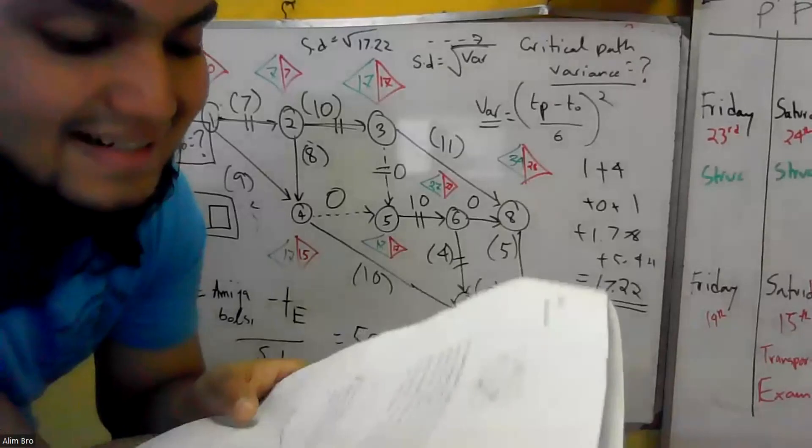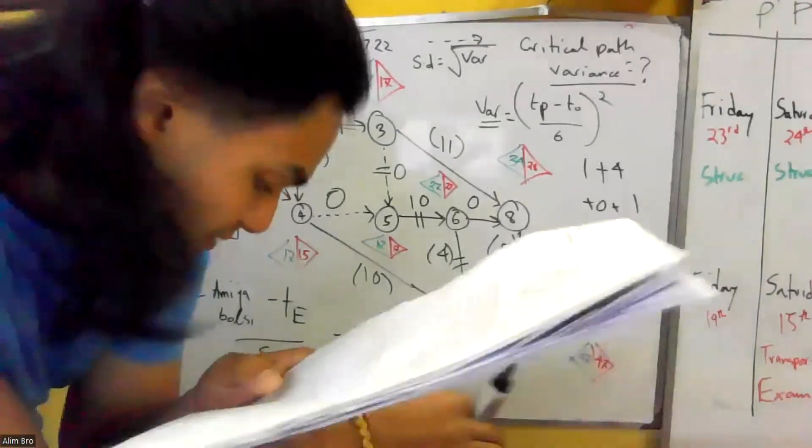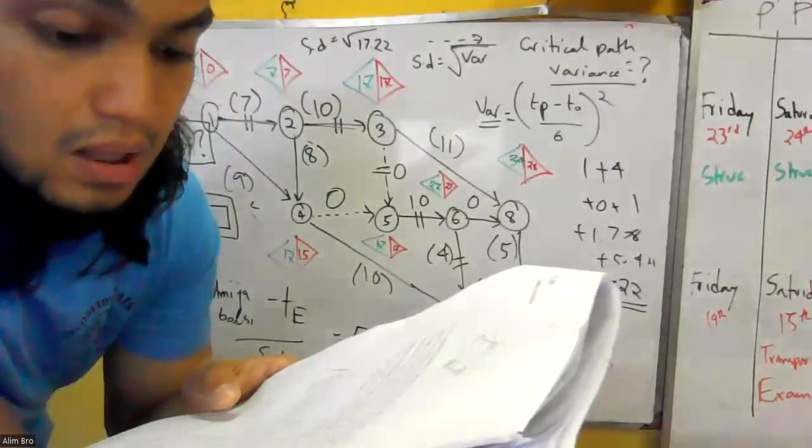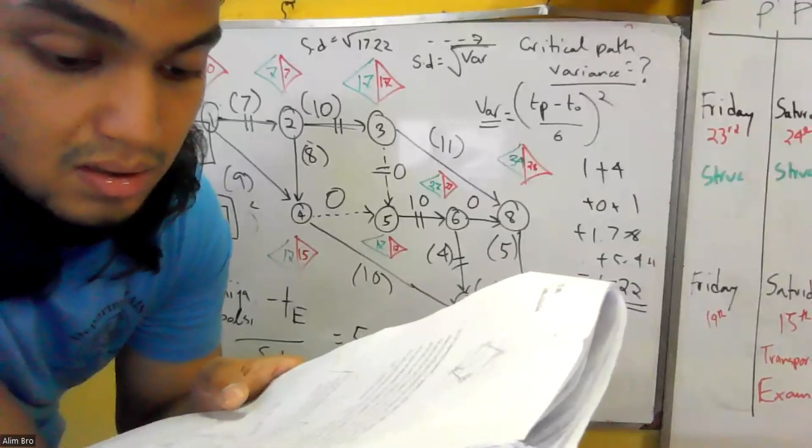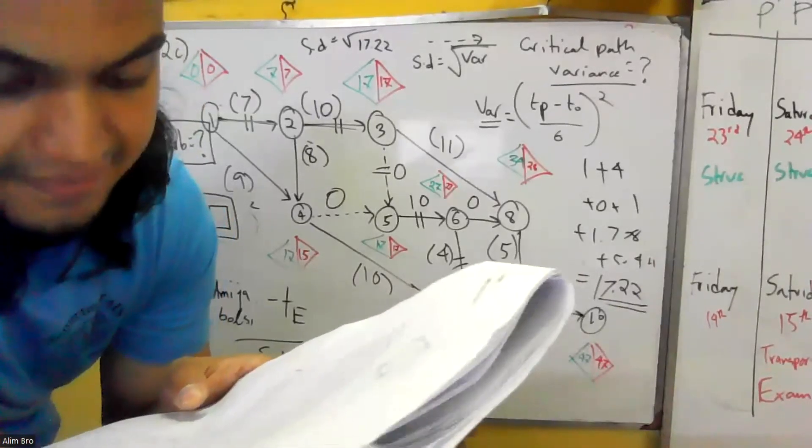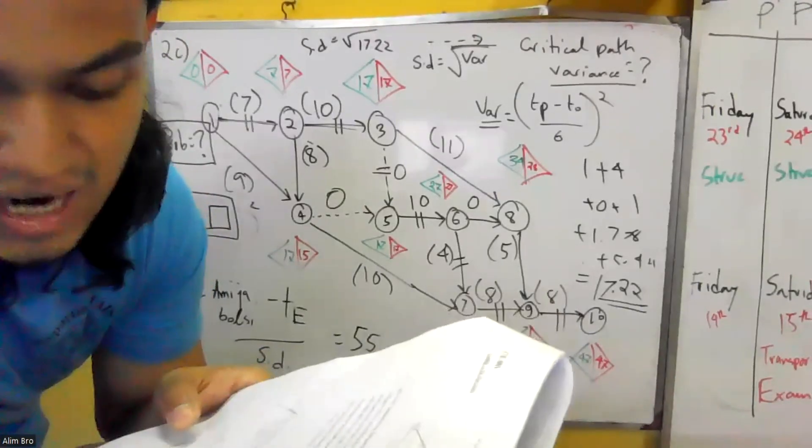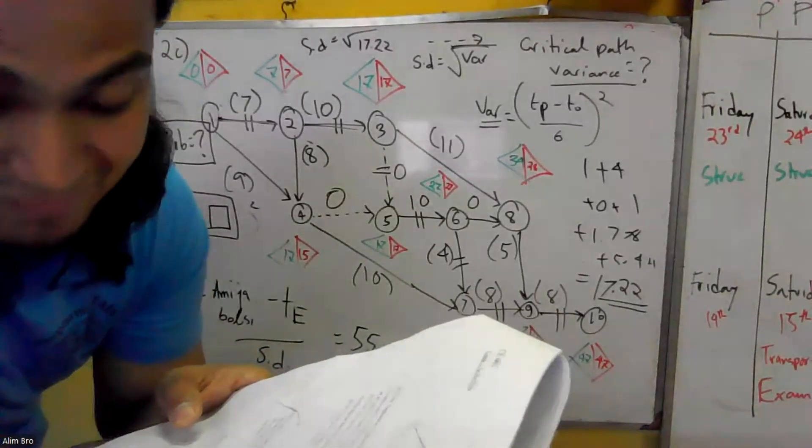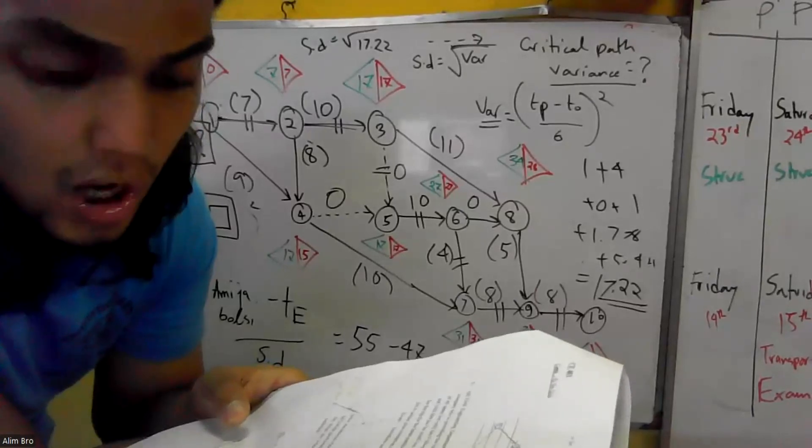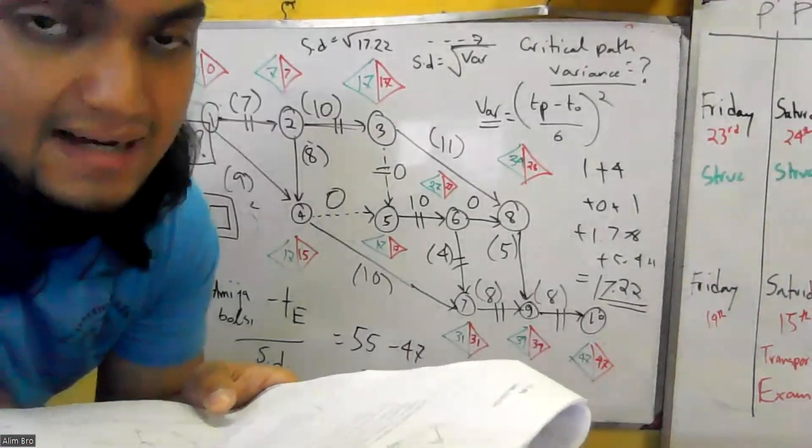B and E succeed B. I succeeds E and F. G and F succeed C. J succeeds G. K succeeds H. I and J, and is the final activity.